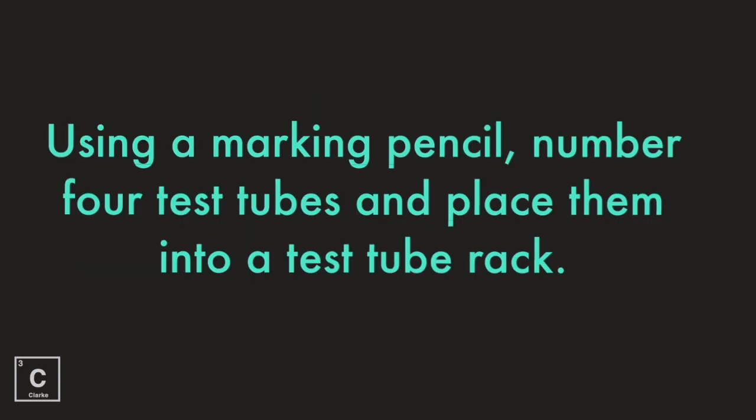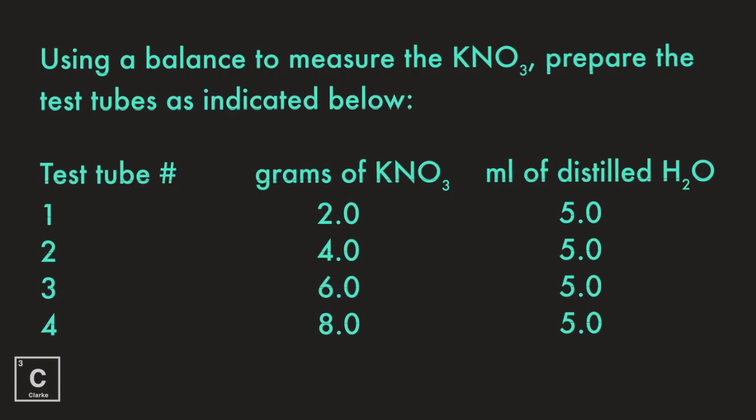Using a marking pencil, number four test tubes and place them into a test tube rack. Using a balance to measure the potassium nitrate, prepare the test tubes as indicated. In the first test tube, put two grams of potassium nitrate with five milliliters of distilled water. Test tube two has four grams, test tube three has six grams, and test tube four has eight grams — all in five milliliters of distilled water.